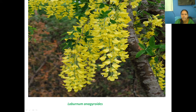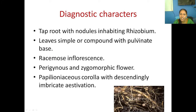The diagnostic characters: the main character is that it produces leghemoglobin because of the root nodule inhabited by Rhizobium bacteria using the nitrogenase enzyme. The leaves are simple or compound with a pulvinus base, racemose inflorescence, and zygomorphic flowers. More commonly, perigynous and zygomorphic are seen. Perigynous means half inferior, half superior ovary; zygomorphic means there is asymmetry in the flower.